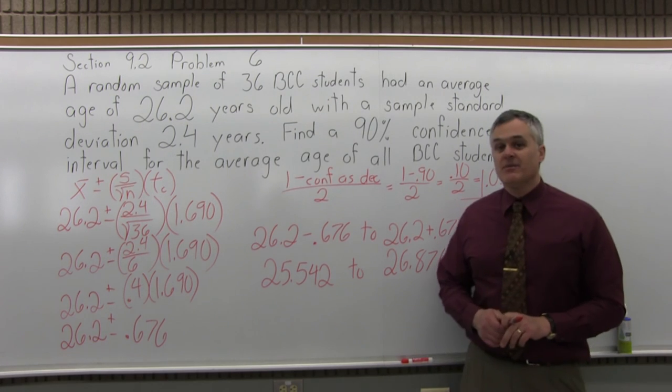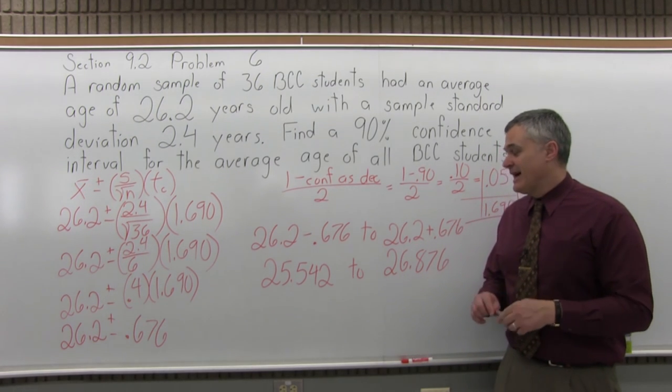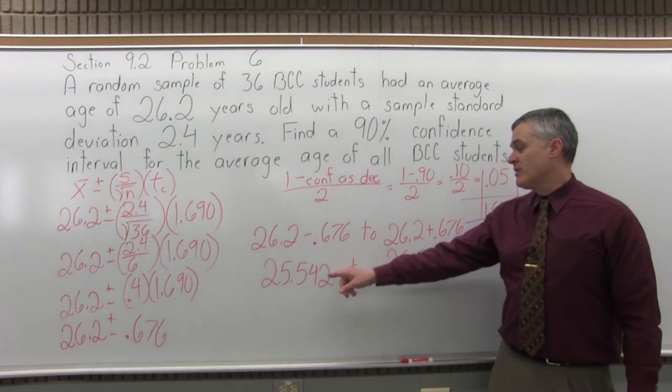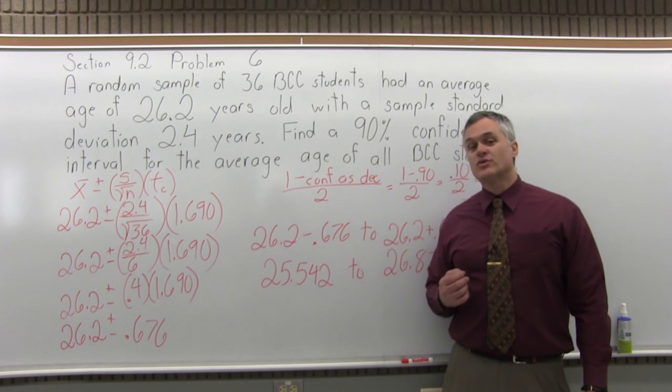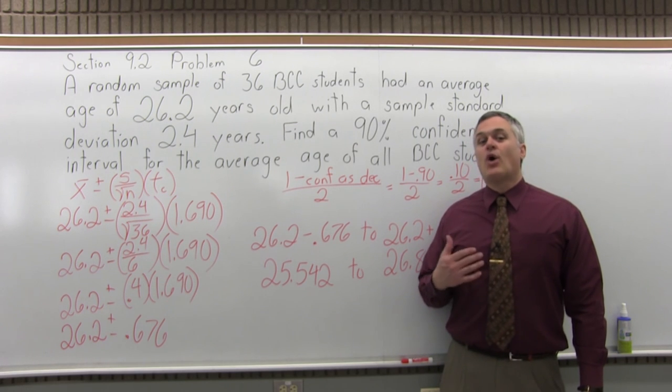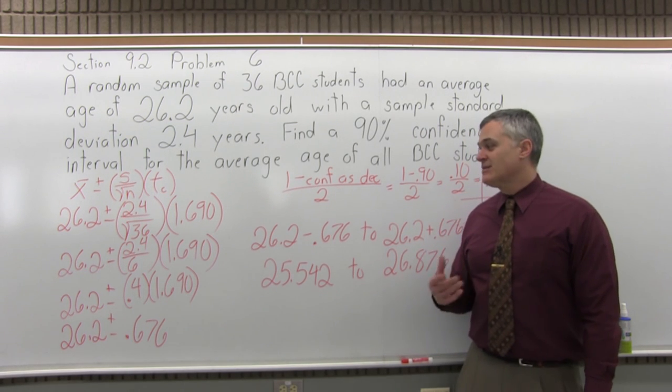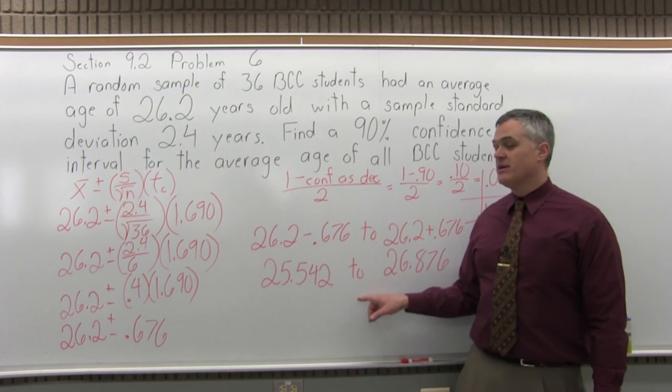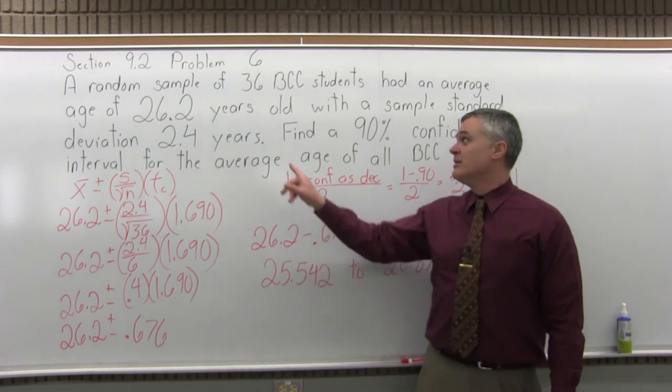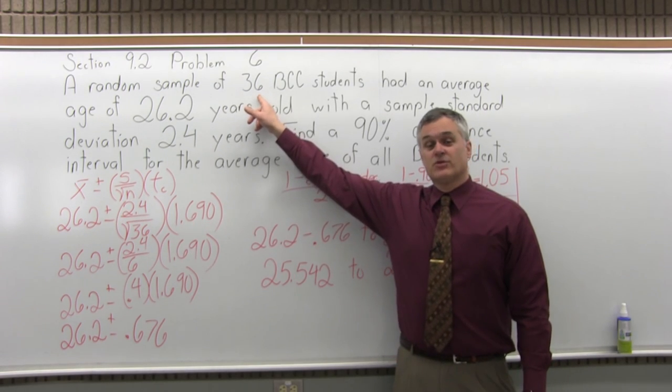So that means that I am 90% sure that 25.542 to 26.876 is an interval that contains the true average age of all BCC students, which is thousands and thousands. We have typically 10,000 to 12,000 full-time enrolled per year. So I'm pretty sure based on only a sample of 36 students.